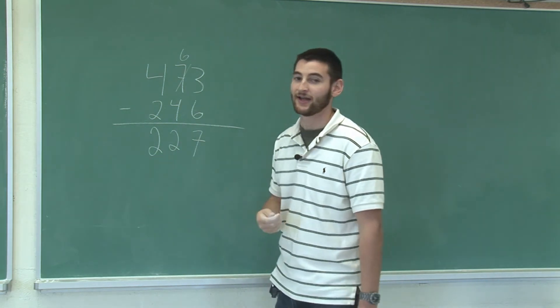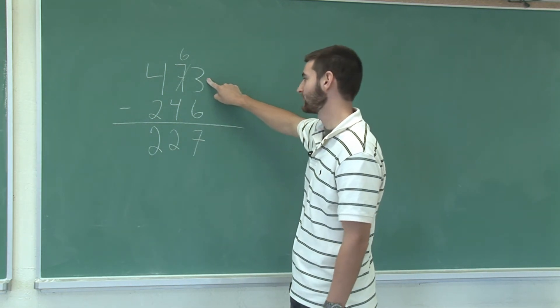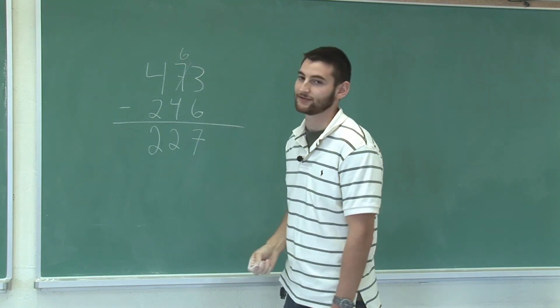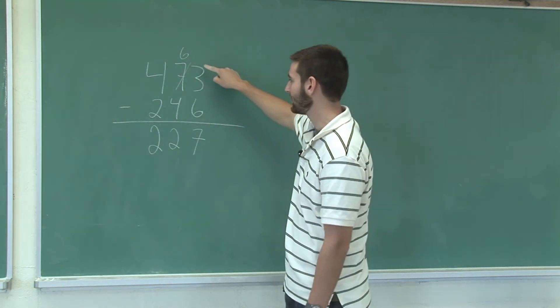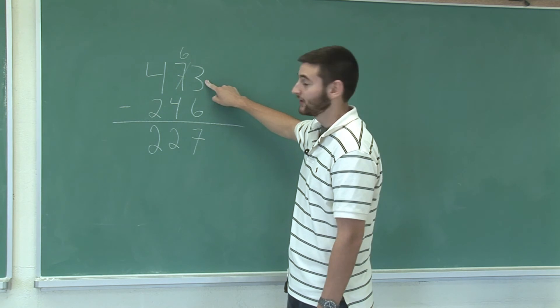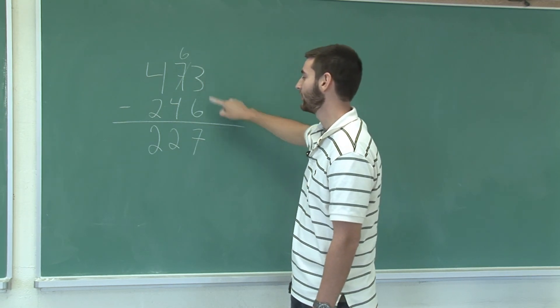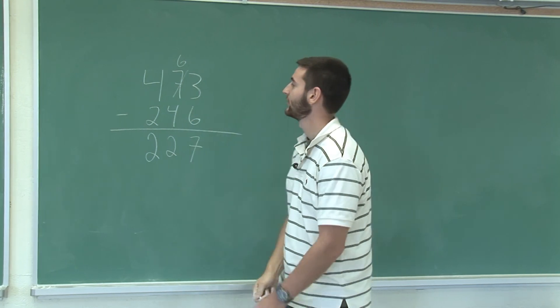The important part here is that when the number on top is smaller than the number on bottom, you need to borrow or else you couldn't have done this operation. Once we borrow, this becomes a 3 with a 10 attached to it, so it becomes 13, which allows us to perform the subtraction without any problems.